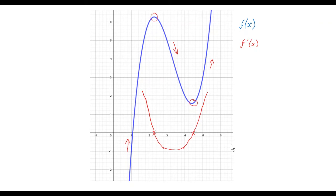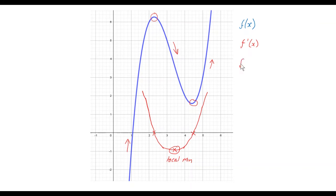The point of inflection is where the gradient switches from being negative and decreasing to still being negative but increasing — that corresponds to the local minimum on the graph of f'(x). To find that minimum we differentiate f'(x) to get the second derivative f''(x) and set it equal to zero. That gives us the x-coordinate of the point of inflection.